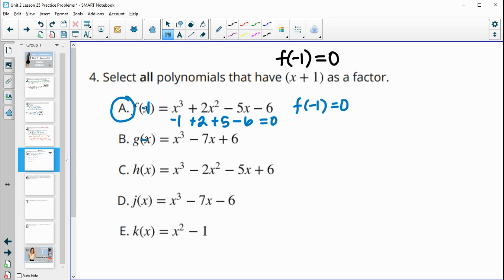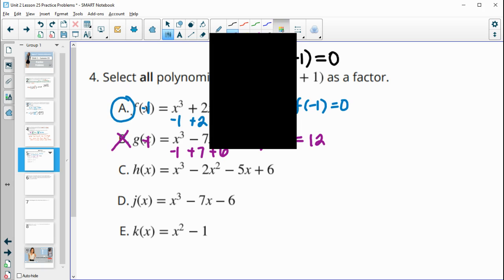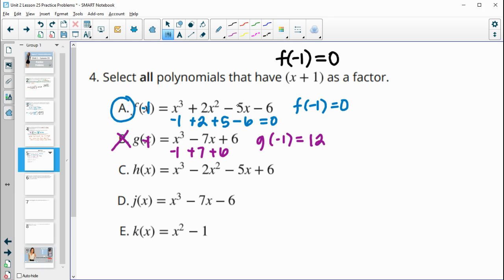So let's do that for this next one as well. So for g, let's plug in negative 1. Negative 1 cubed is negative 1. Negative 7 times negative 1 is plus 7. And then plus 6. So this g of negative 1 is equal to 12. So this is not a factor. So X plus 1 is not a factor of g.